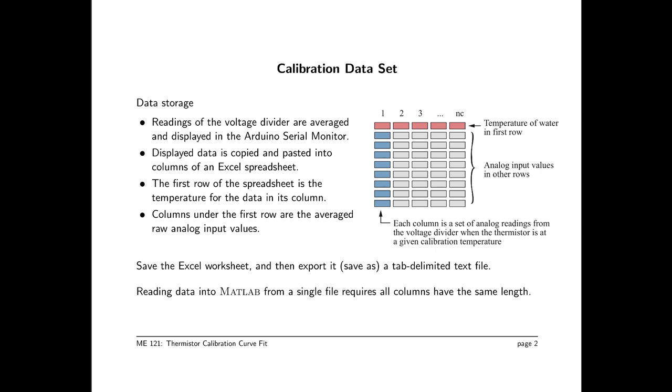So you've done this by running the experiment, copying the output of the serial monitor into an Excel spreadsheet. When you want to save this, you first save it as an Excel worksheet and then export the worksheet as a tab-delimited text file.